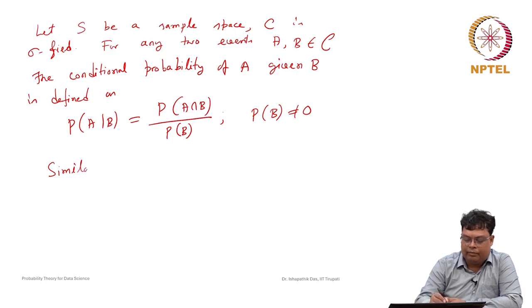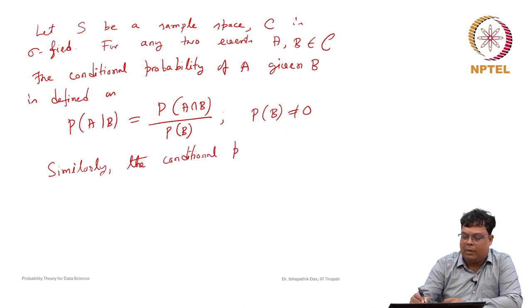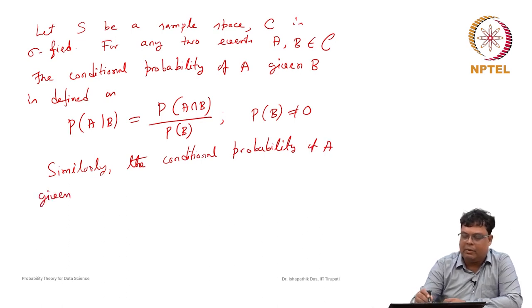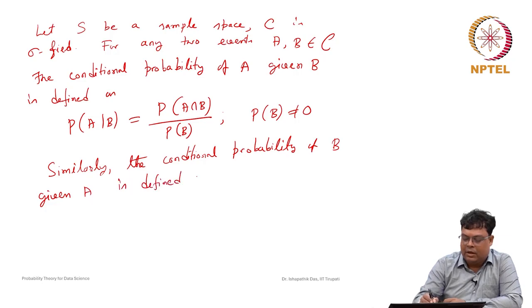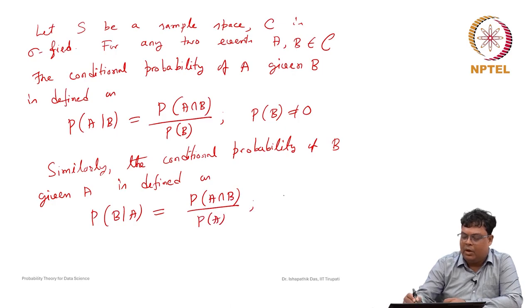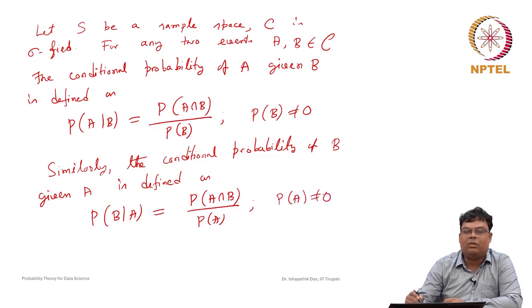Similarly, the conditional probability of B given A is defined as P(B|A) = P(A∩B) / P(A), where it is assumed that P(A) ≠ 0.